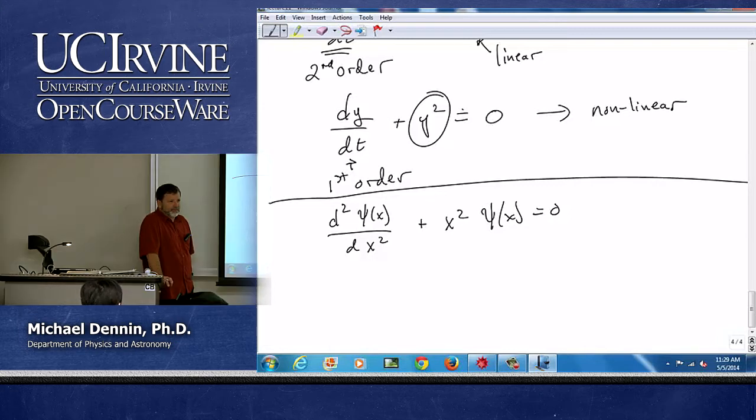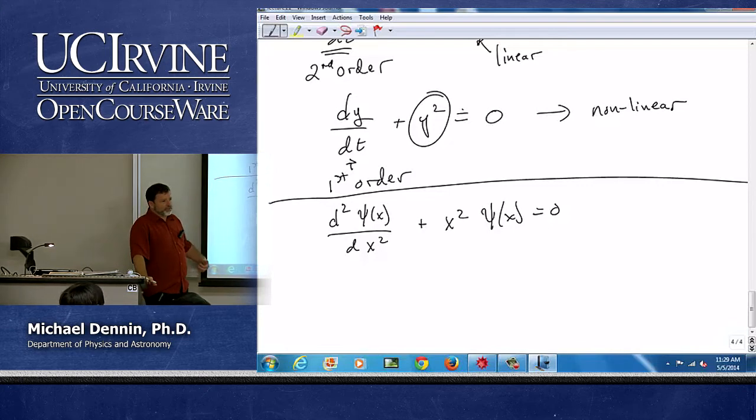So what do we think? Linear or nonlinear? Nonlinear. Who says nonlinear? Hold and firm. Okay. Who says linear? The discussion did nothing. Except make a few linear people not hold that. So this violates that theory of peer instruction where you have people talk to each other and they come to the right answer.